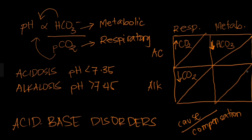Let's go to metabolic alkalosis. In metabolic alkalosis you have an increased pH due to a shift in bicarbonate level. For the pH to increase, bicarbonate has to increase — remember, pH and bicarbonate are directly proportional.